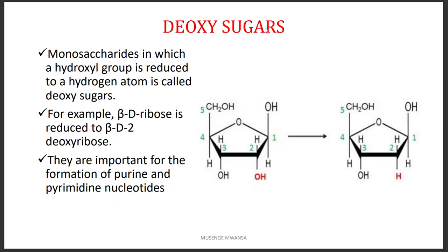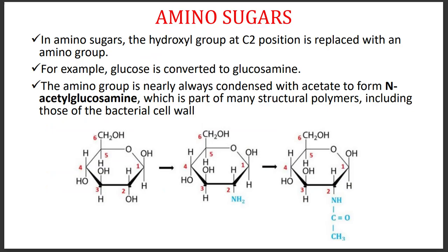We also have deoxy sugars. For example, in ribose at carbon number two, instead of having a hydroxyl group we have only a hydrogen — deoxy means we remove an oxygen. So we get deoxyribose, which is found in DNA and is important in the formation of purine and pyrimidine nucleotides.